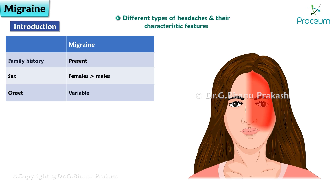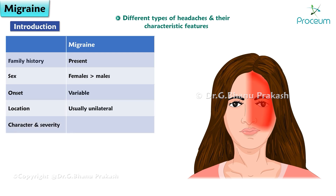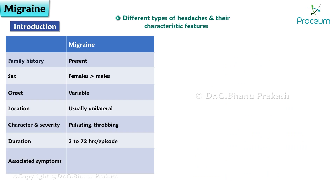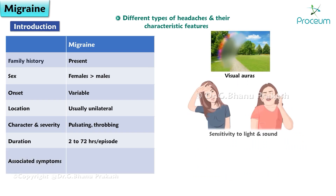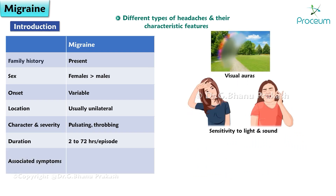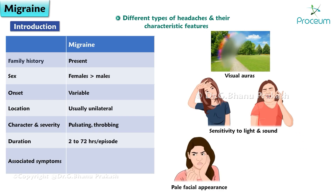The onset of migraine is variable, location is usually unilateral, and the character is pulsating and throbbing. Duration lasts for 2 to 72 hours per episode. Associated symptoms include visual auras, sensitivity to light and sound, pale facial appearance, nausea, and vomiting.